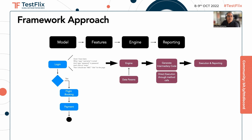Your engine can transpose all the data or the parameters mentioned in the feature. It can either generate the intermediary code, which is your test automation code, or it can directly execute — as happens in Karate. Once it executes, obviously you will be able to get the execution and reporting.